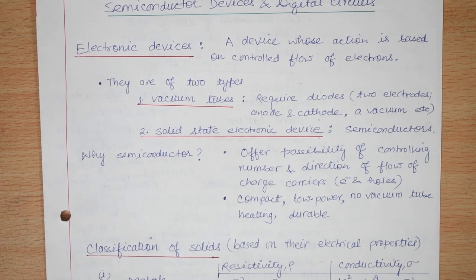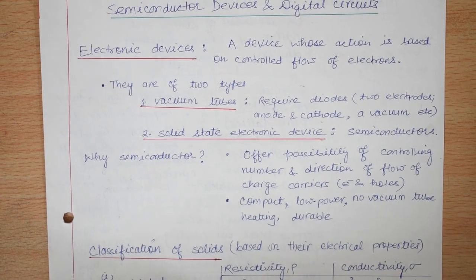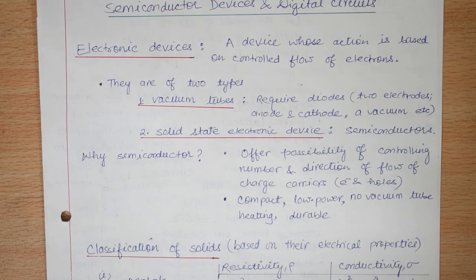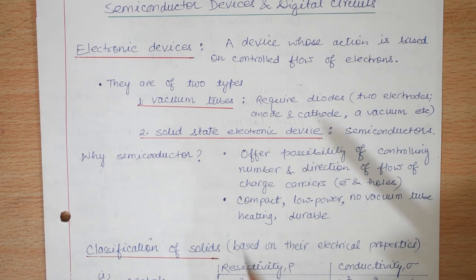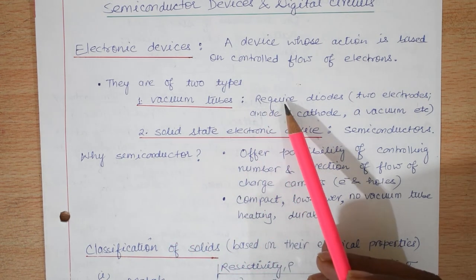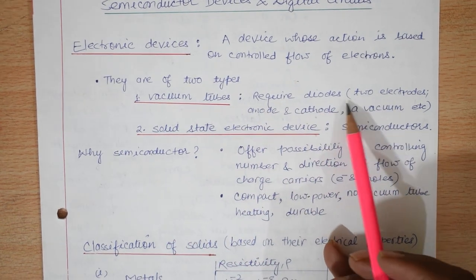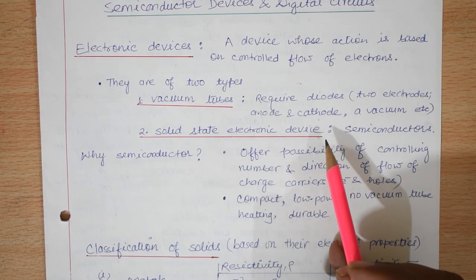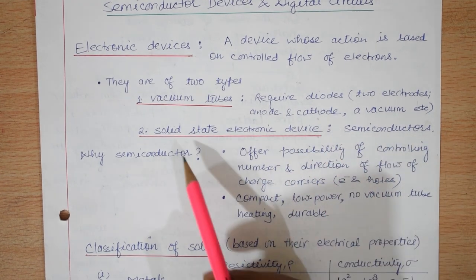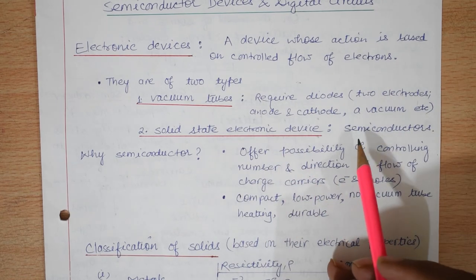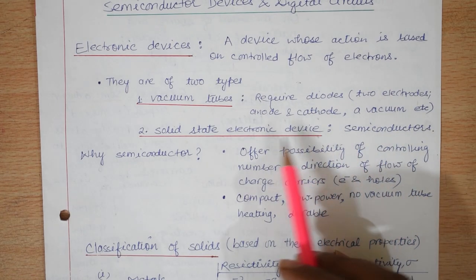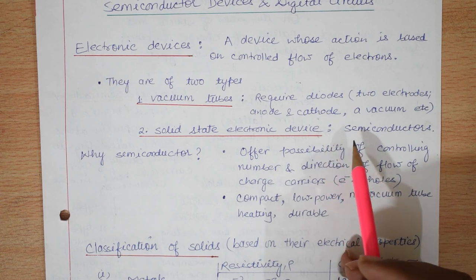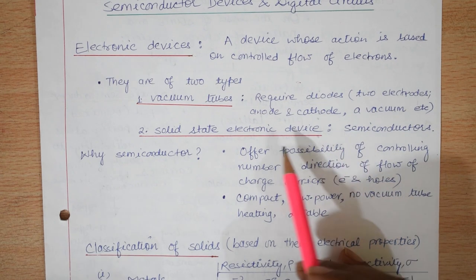Chapter 14: Semiconductor Devices and Digital Circuits. An electronic device is one whose action is based on the controlled flow of electrons. These devices are of two types: first, vacuum tubes, which require vacuum diodes. Vacuum diodes have two electrodes, cathode and anode, with vacuum in between, and electrons flow from cathode to anode. The second type is solid-state electronic devices. Semiconductors are generally solid-state electronic devices, such as PN junctions, transistors, and integrated circuits.